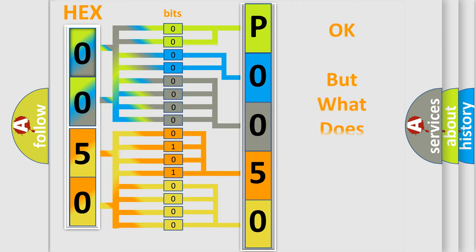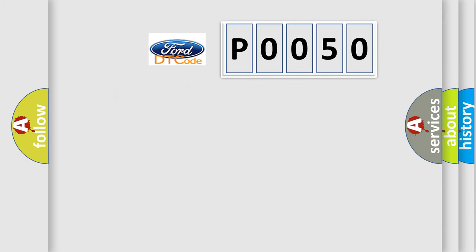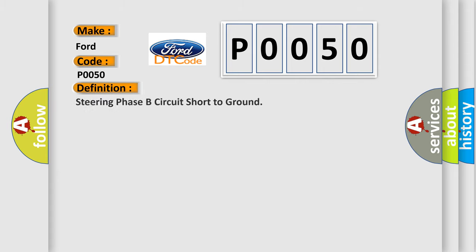We now know in what way the diagnostic tool translates the received information into a more comprehensible format. The number itself does not make sense to us if we cannot assign information about what it actually expresses. So, what does the Diagnostic Trouble Code P0050 interpret specifically for Infiniti car manufacturers?